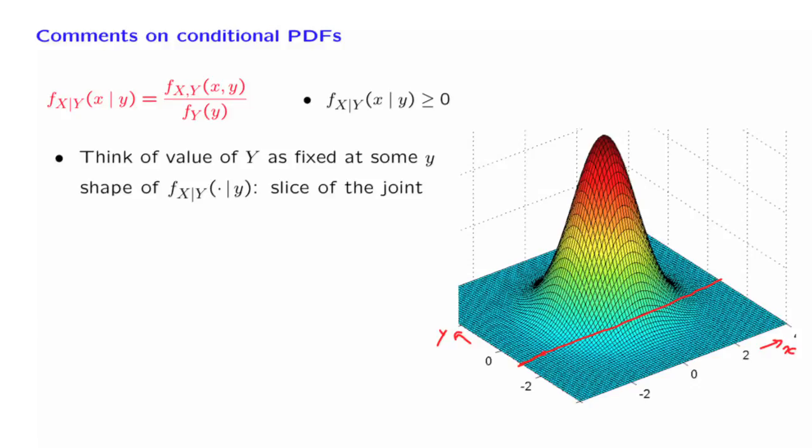So the height of the joint, if we trace it, is one of those curves up here, and it kind of goes down. So it is really a slice taken out of the joint PDF. If we condition on a different y, we get a different slice of the joint PDF, and so on.